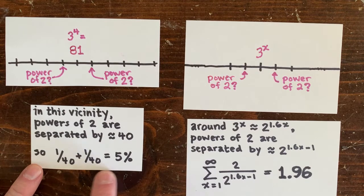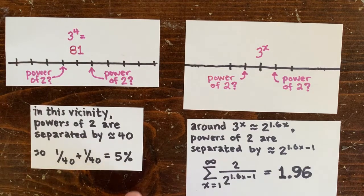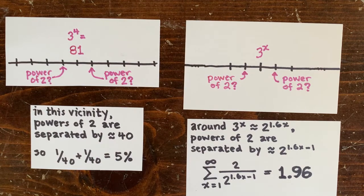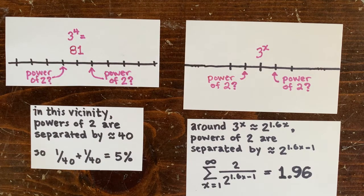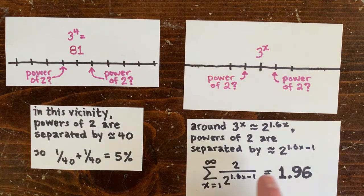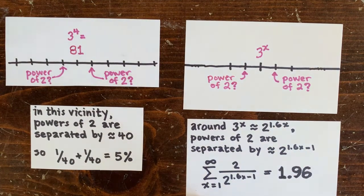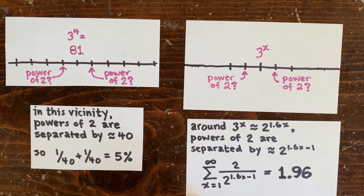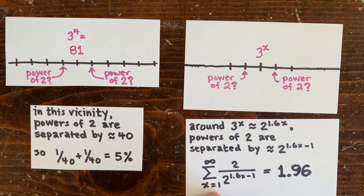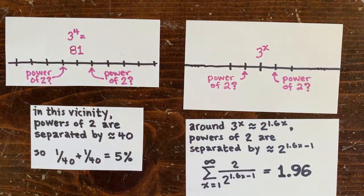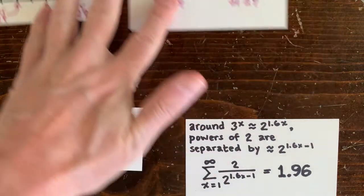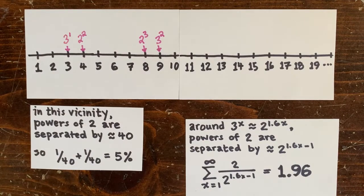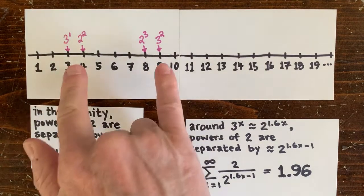So if we combine those, we can say there's a 1 in 20 chance that a neighbor of 3 to the 4th is a power of 2. But as 3 to the x gets bigger and bigger, the powers of 2 get more and more sparse, and the odds get a lot worse than 1 in 20. And so, actually, if we sum up all the chances through all infinity, we get an estimate of 1.96 times. So we expect that the powers of 2 and 3 should be adjacent, maybe twice, ever. And that's exactly what happens in reality.